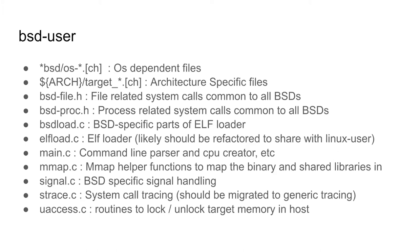Inside bsd-user there are directories for FreeBSD, NetBSD, and OpenBSD containing the source code necessary to implement system calls for each of those systems. There are also a number of architectural directories — PowerPC, AArch64, ARM, etc. — containing the architecture-specific files needed to implement each individual architecture.